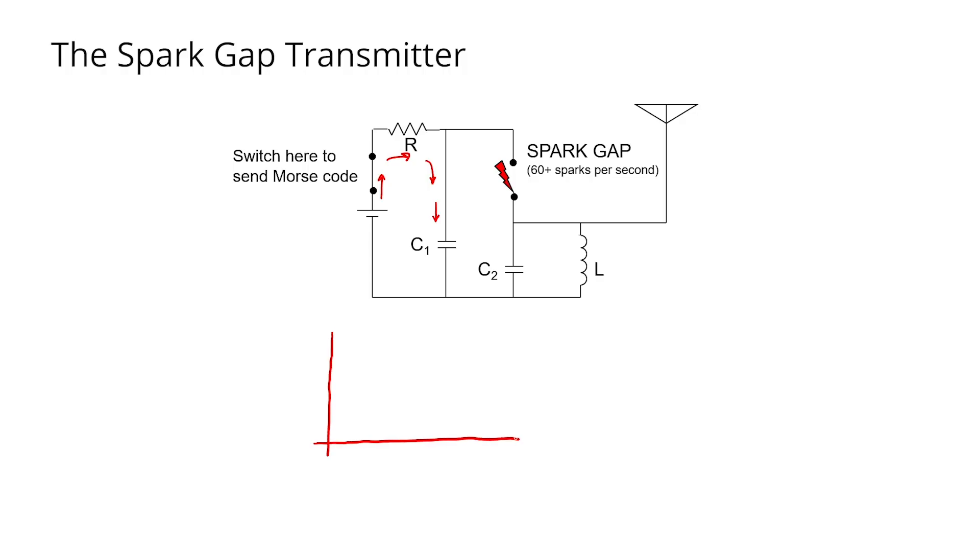Let me draw a graph of the voltage across C1 as a function of time. Initially, there's no voltage across the capacitor. At the moment, the Morse switch is closed. But then, the capacitor starts to charge exponentially, and eventually,